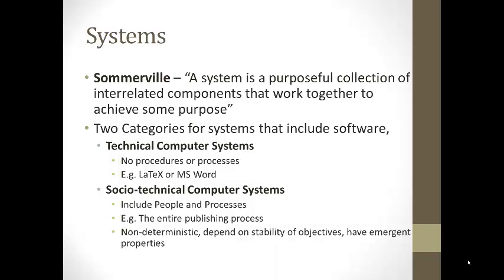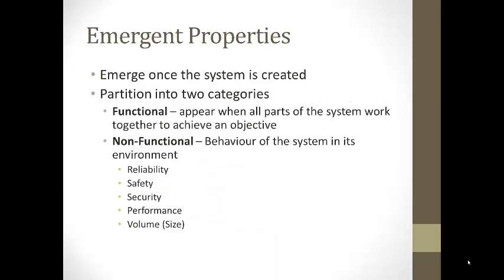That's a Sociotechnical System because it includes a technical computer system such as a word processor or layout system, but it includes everything including the people and the processes. It's non-deterministic and depends on the stability of the objectives. Sociotechnical Systems also have emergent properties. Emergent properties are those properties that emerge once the system is created, and we can partition those into two categories. Functional emergent properties appear when all the parts of the system work together to achieve an objective.